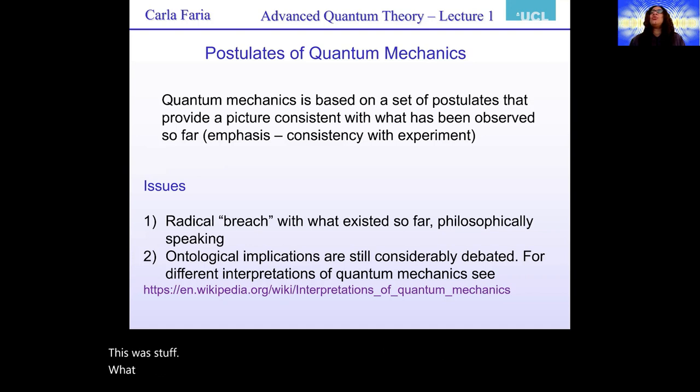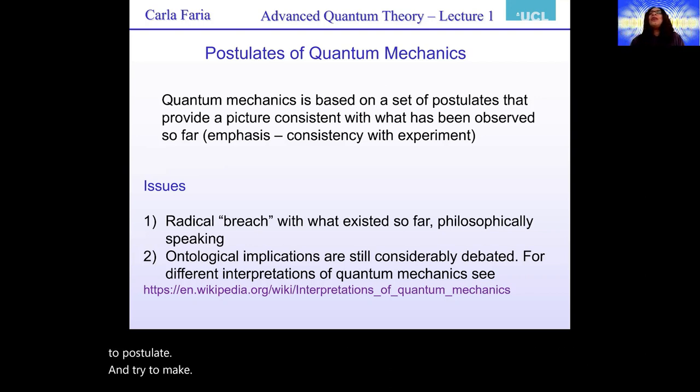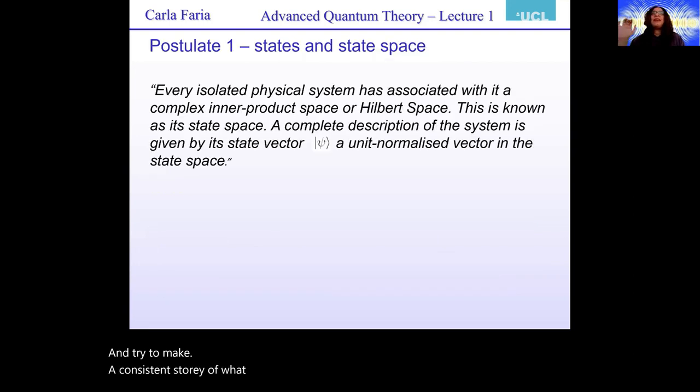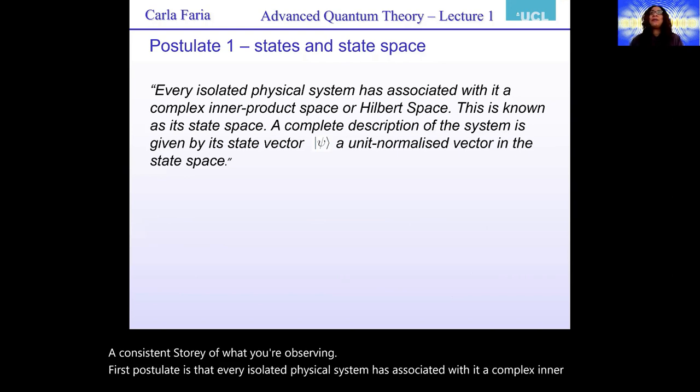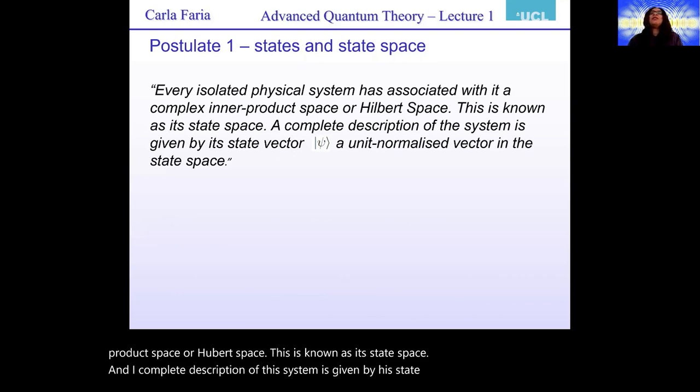So people were finding things experimentally in the early 20th century. This was tough. What was available could not be used to explain that. And when you observe things and you realize you're going to need new paradigms, you start to postulate and try to make a consistent story of what you're observing. So the first postulate is that every isolated physical system has associated with it a complex inner product space or Hilbert space. This is known as its state space. And a complete description of the system is given by a state vector psi, a unit normalized vector in the state space.